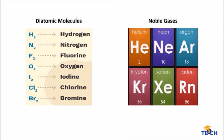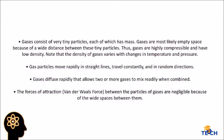Other measurable properties include the amount of gas or number of moles. According to the kinetic molecular theory of gases, a gas has the following characteristics: gases consist of very tiny particles each of which has mass, gas particles move rapidly in straight lines traveling constantly and in random directions, and gases diffuse rapidly, which allows two or more gases to mix readily when combined.